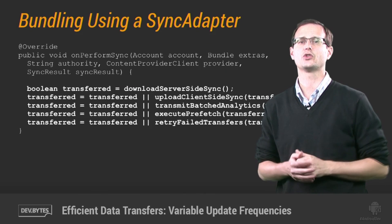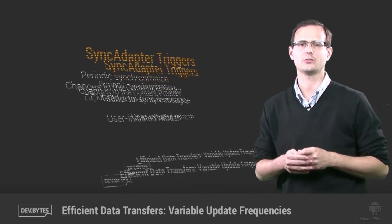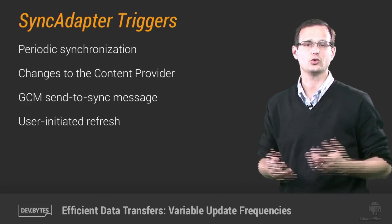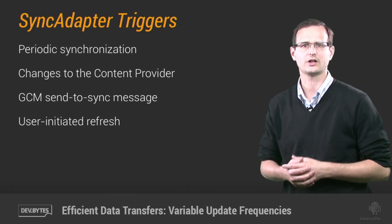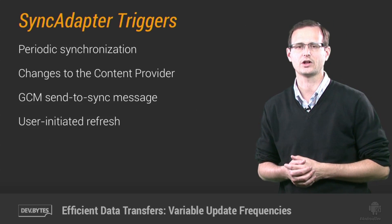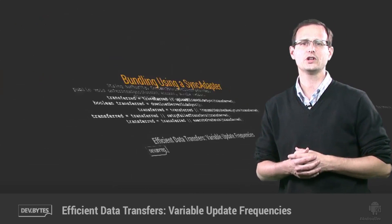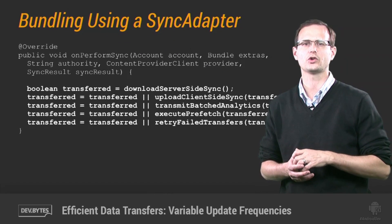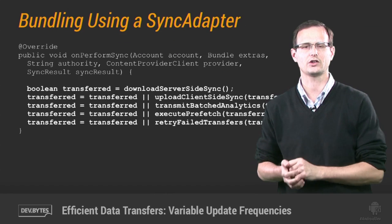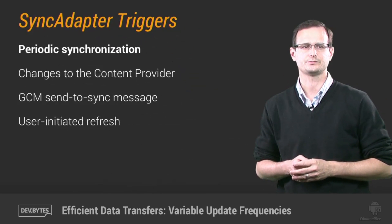In other devbytes on using the sync adapter, you saw how to group all of your app's transfer methods within your sync adapter's perform sync method. A sync adapter can be triggered a number of ways, including GCM tickles, client side changes, scheduled updates, or user actions like selecting a new song or browsing an article that hasn't been prefetched. Within our perform sync handler, we need to determine which of these triggers are sufficient to initiate a new transfer, starting with scheduled updates.